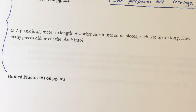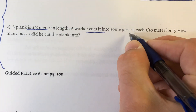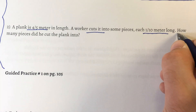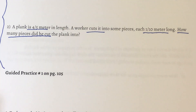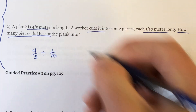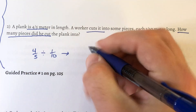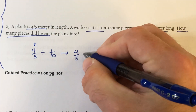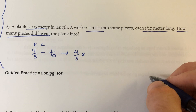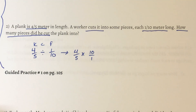Our second example: a plank is 4/5 meters in length. A worker is going to cut it into pieces each 1/10 meter long. How many pieces did he cut? We have a board that's 4/5 meters long and we're dividing it into pieces that are 1/10 of a meter long. So our problem is 4/5 divided by 1/10. Again, we don't divide fractions — we multiply by the reciprocal. We keep 4/5, change the sign to multiply, and take the reciprocal of 1/10, which is 10 over 1.